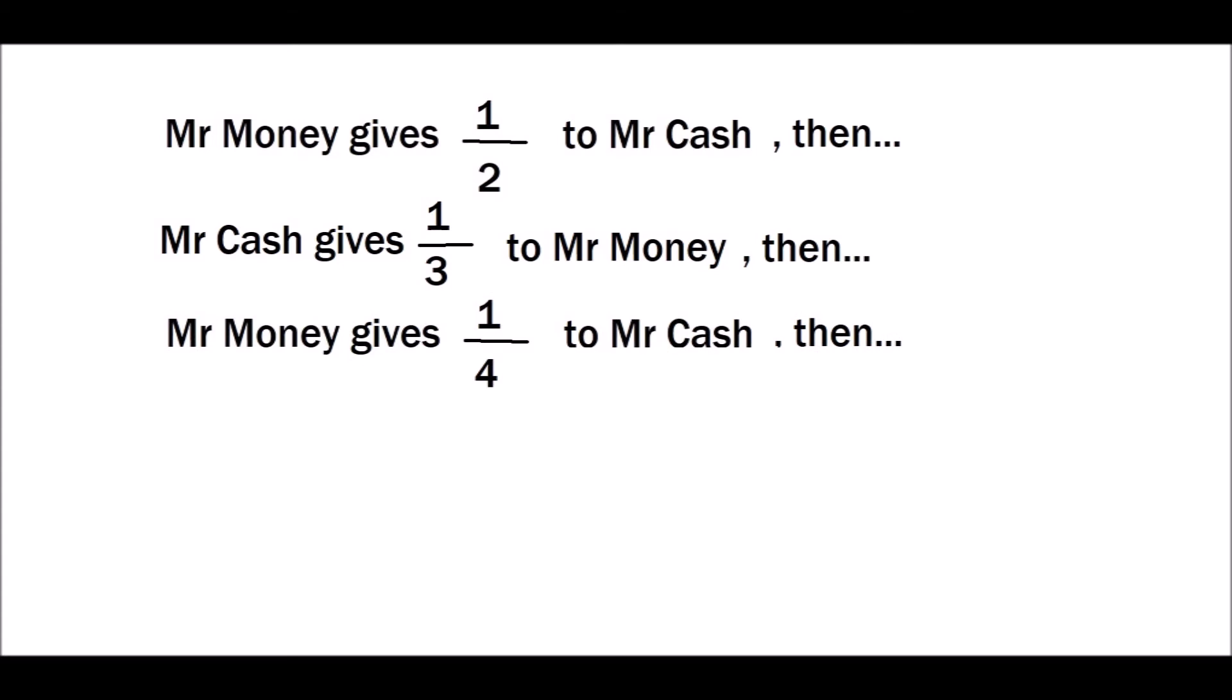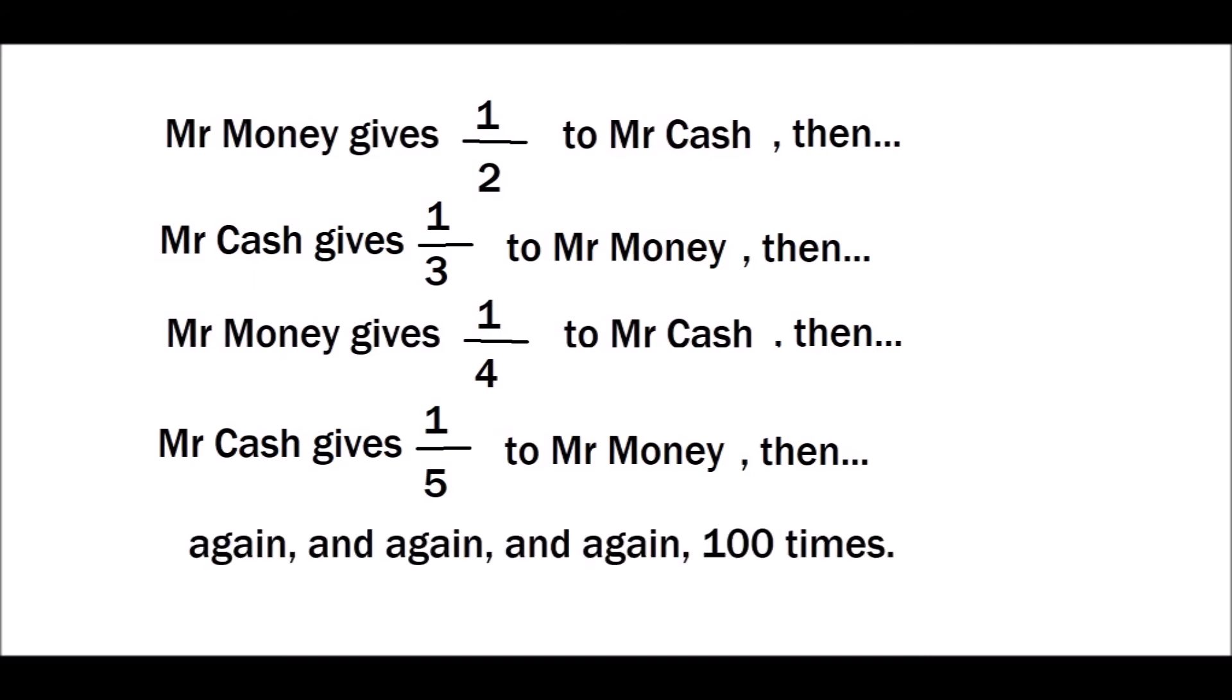And then Mr. Money gives one-fourth of what he has now to Mr. Cash, and then Mr. Cash gives one-fifth of what he has now to Mr. Money. And then again and again and again, 100 times. Now at the end we need to know how much